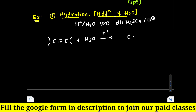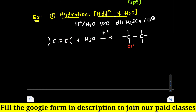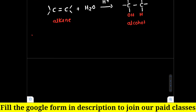When water is added to an alkene in the presence of H+, the double bond is removed. Two new sigma bonds are written around the olefinic carbons — OH at one carbon and H at the other. These products are alcohols, so alkenes are converted into alcohols. Let us now see the mechanism of this hydration reaction.